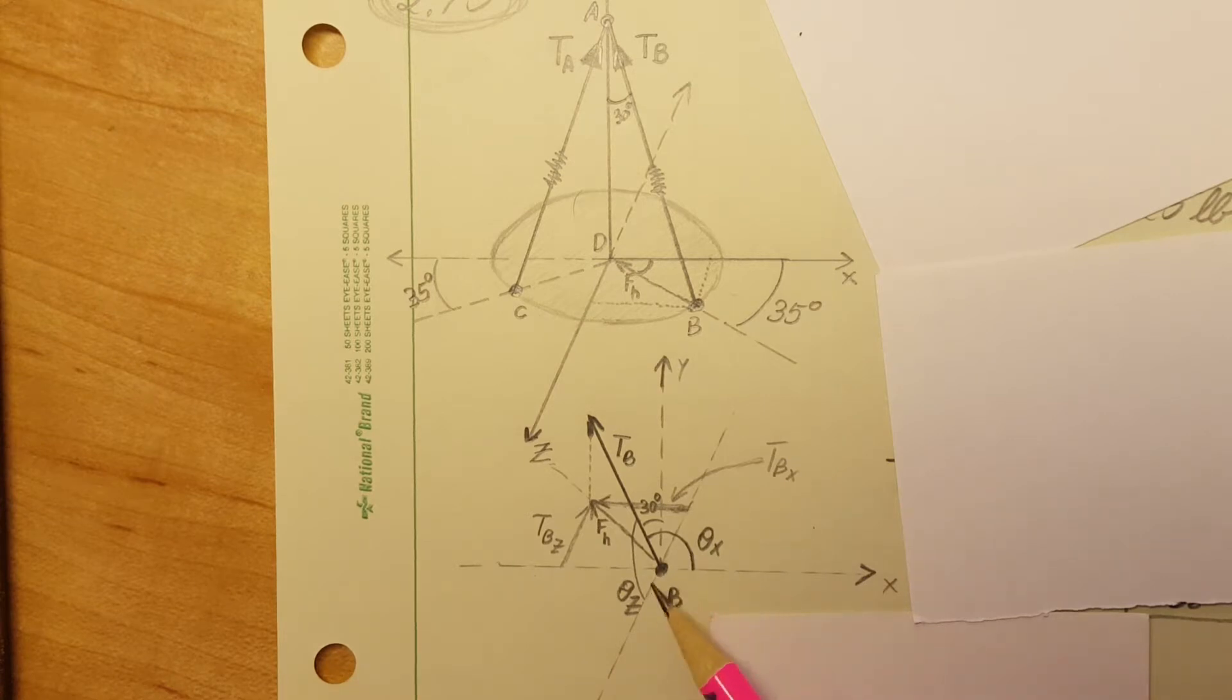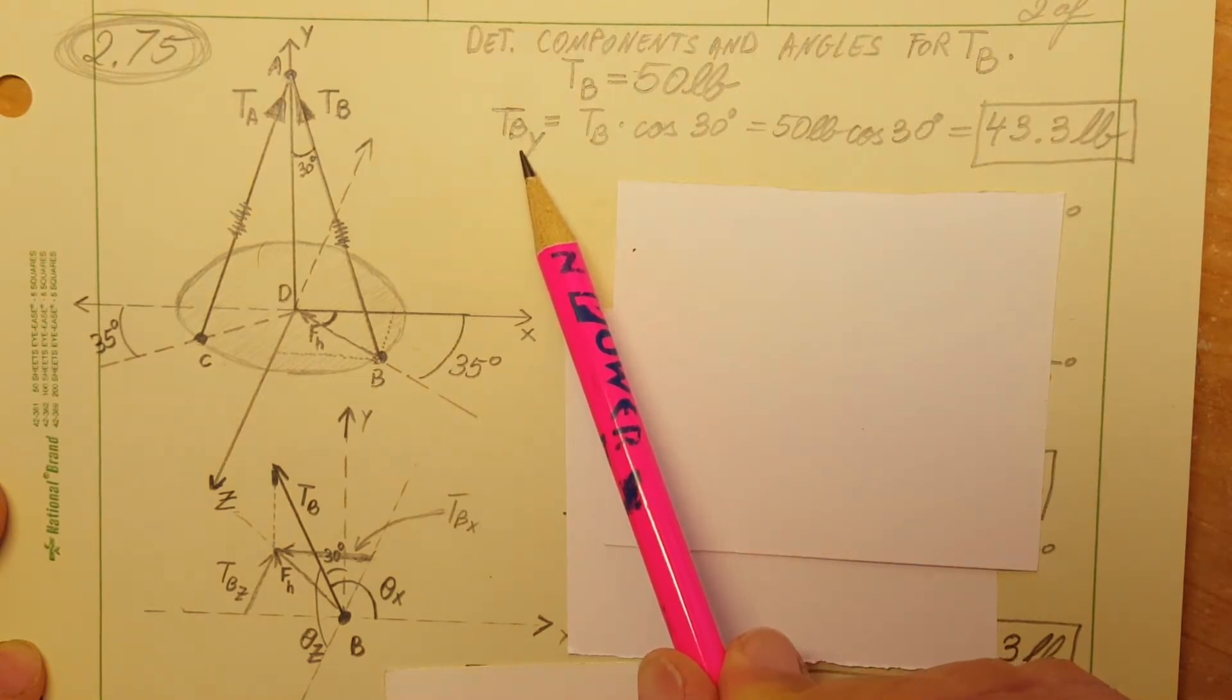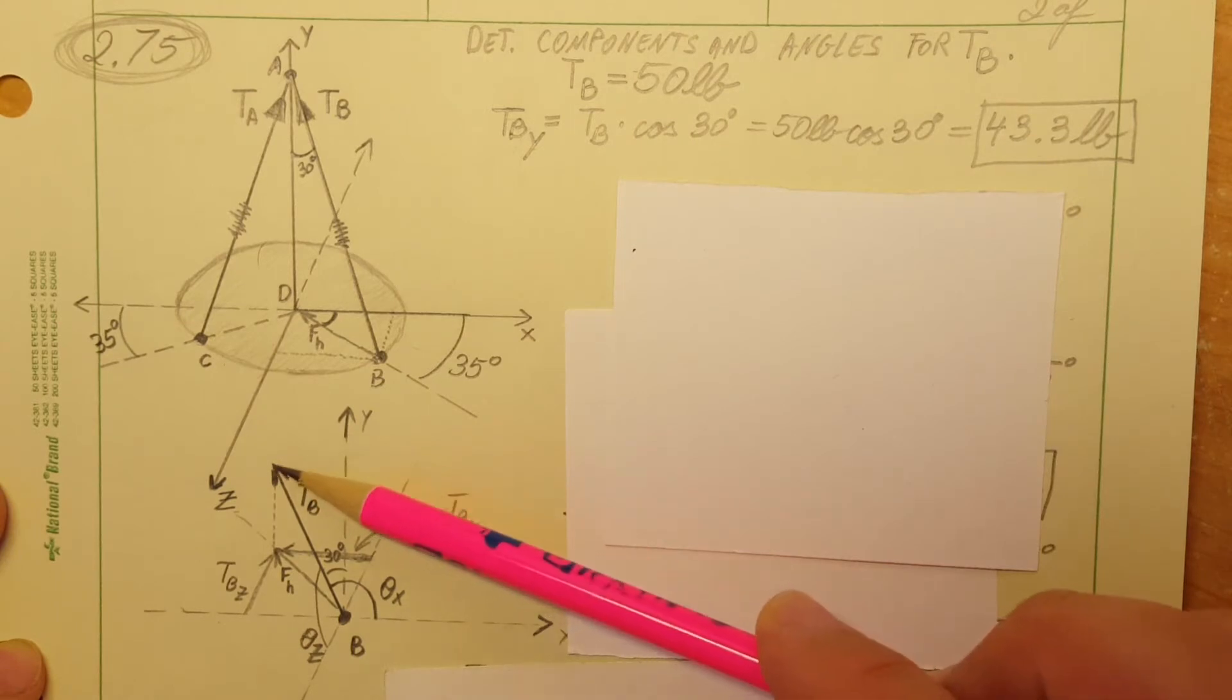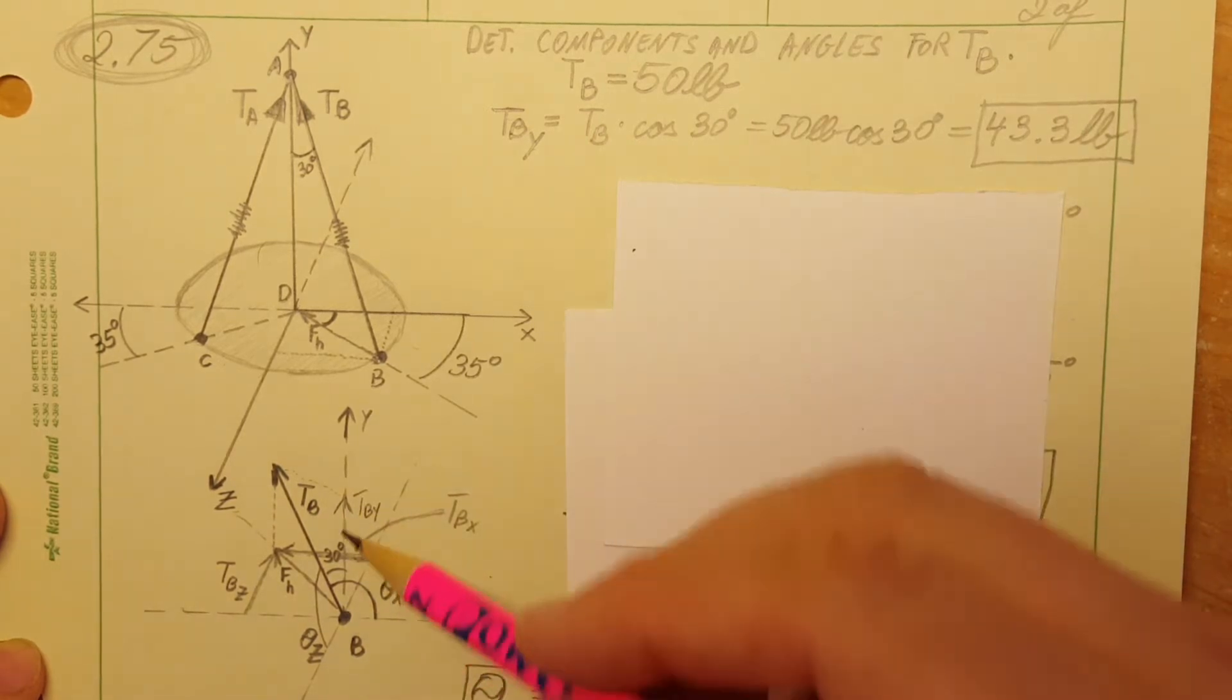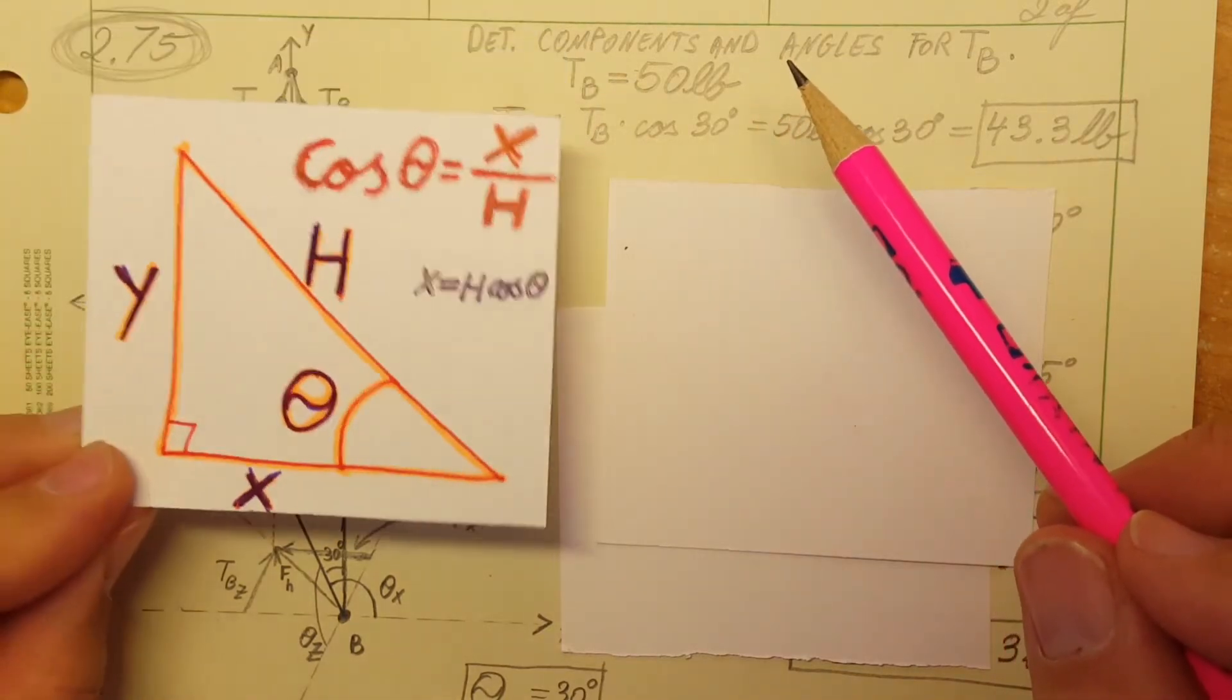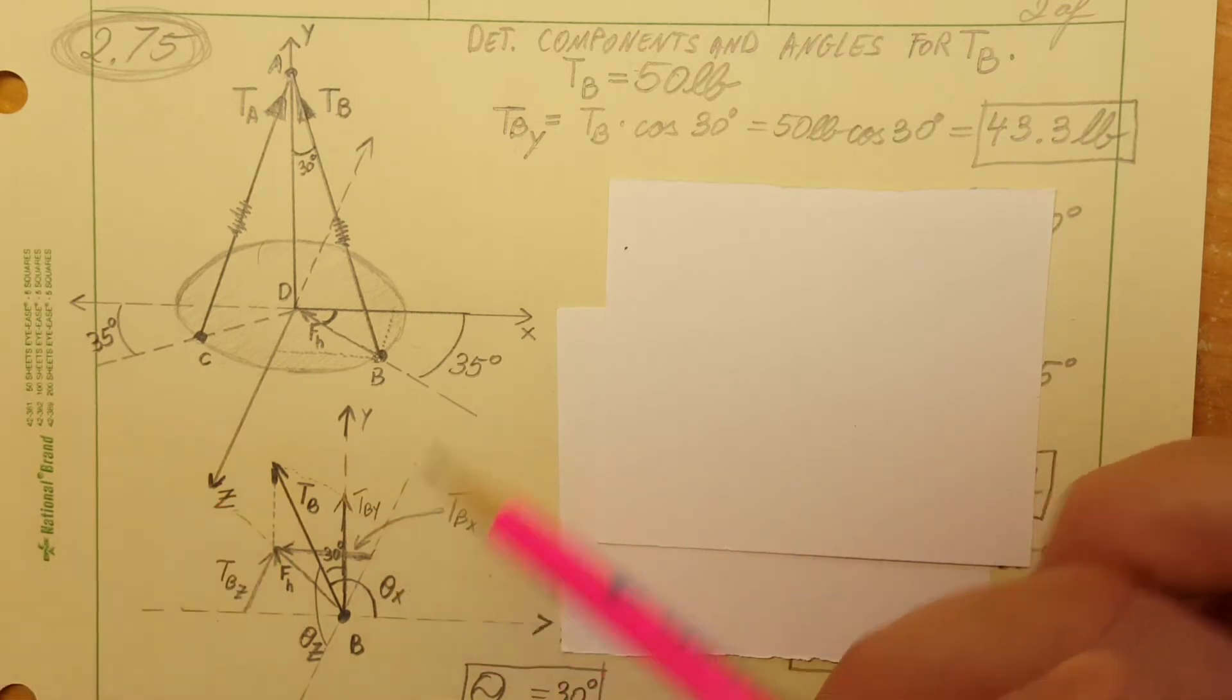This vector I will be calling T with a subscript of B, it's a tension force at point B. I'm going to calculate TB_y first. You can see TB coming to the y-axis this way, and along the y-axis this is where my TB_y will be. We're going to be calculating with cosine using our cosine formula.